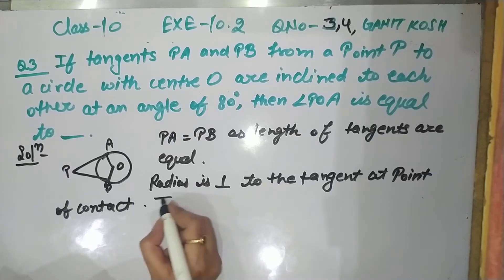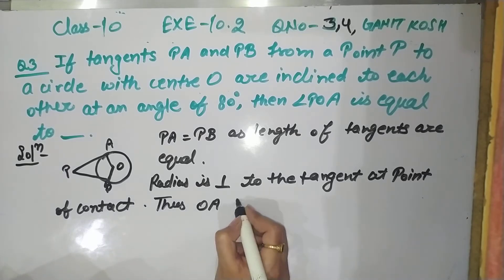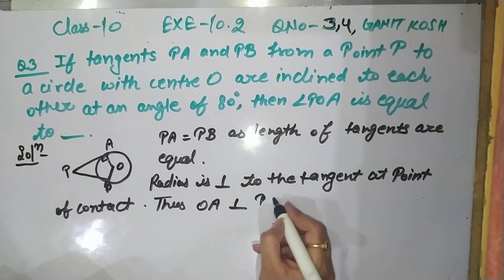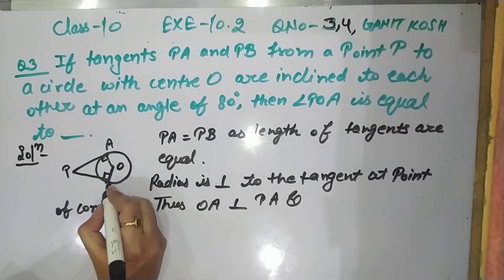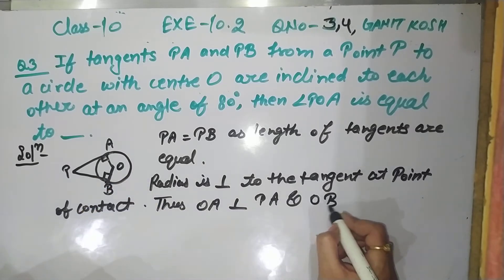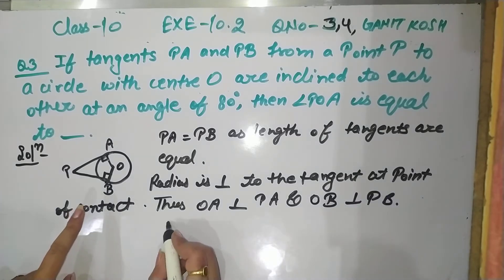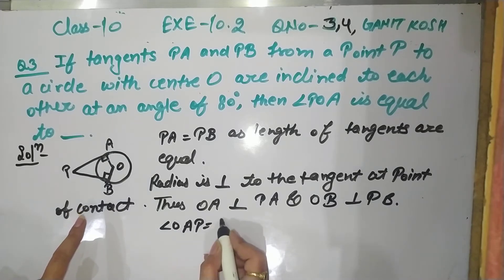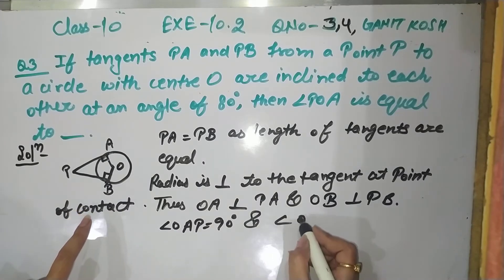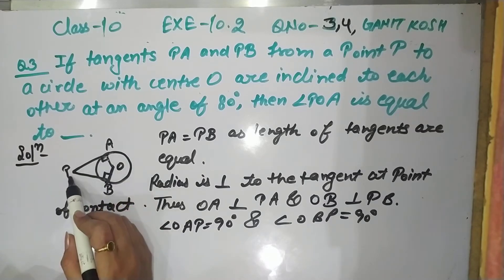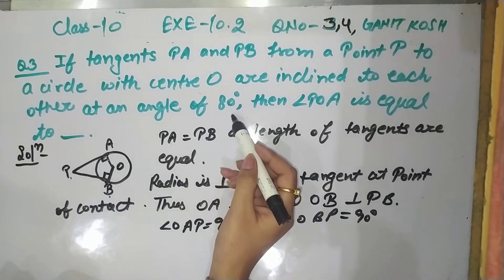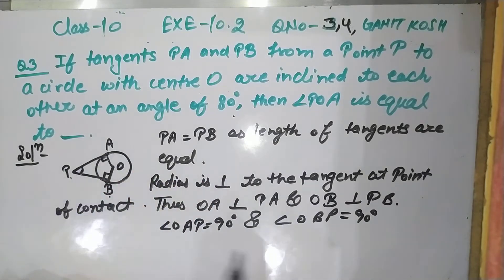Thus, OA is perpendicular on PA and OB is perpendicular on PB. It means angle OAP is 90 degrees and angle OBP is also 90 degrees. Now this one is 80 degrees.